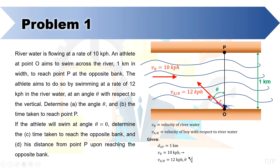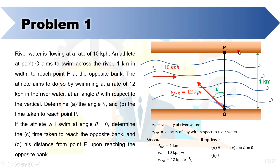Since the river water is flowing, the athlete should swim through the waters at that rate and direction to end up straight at point P. This means that if an observer is moving with the current of the river, he can perceive the athlete to be moving at 12 kph at angle theta with respect to the vertical. In this problem, we are required to get the value of theta so that the athlete will reach the opposite bank at point P, the corresponding elapsed time, and when theta is set to zero, the elapsed time and distance from point P upon arrival.